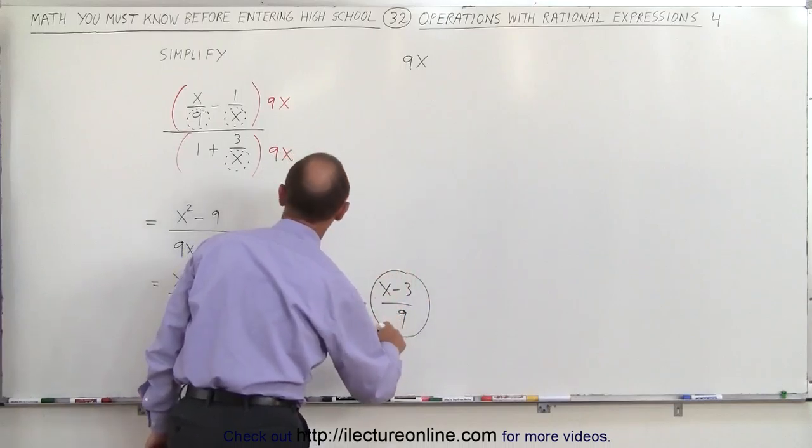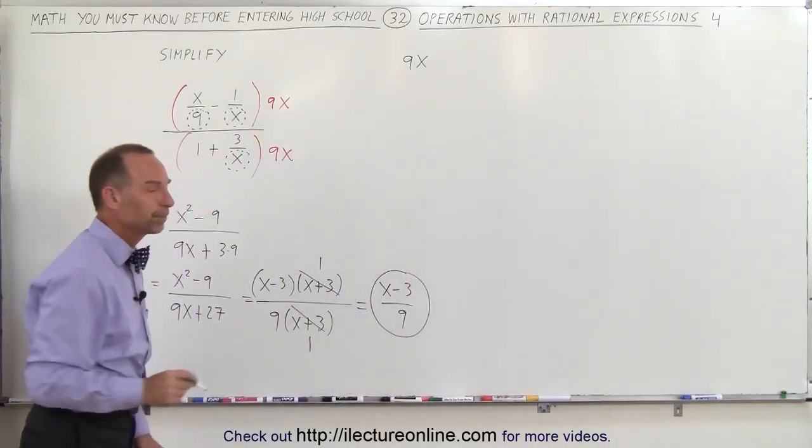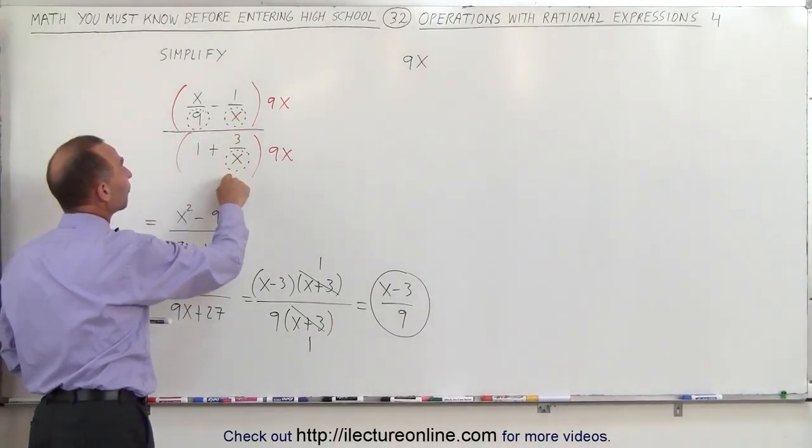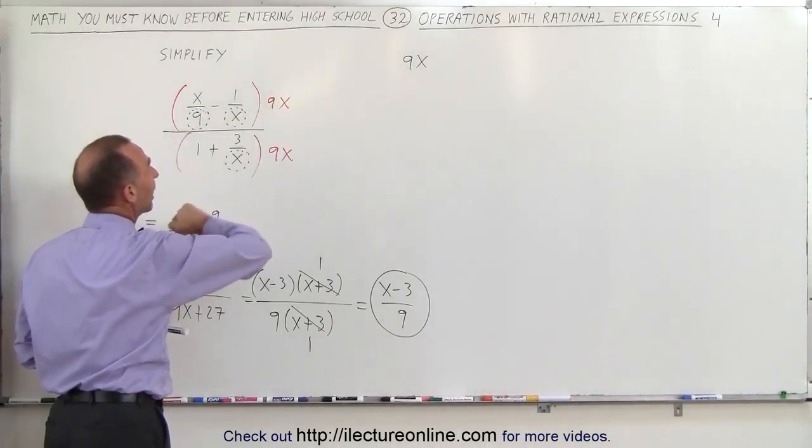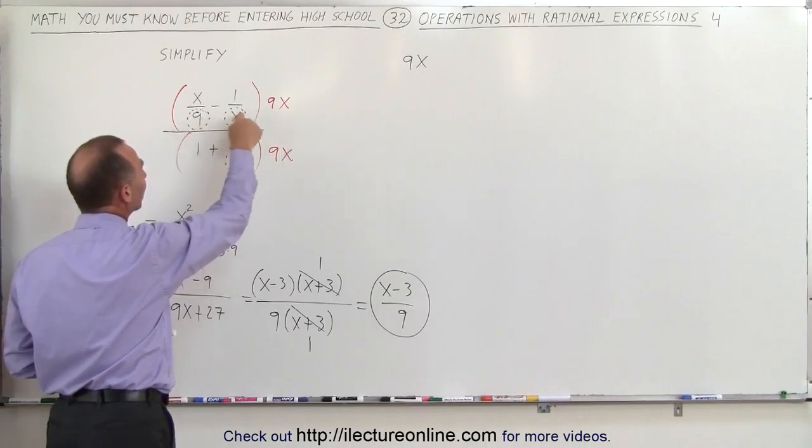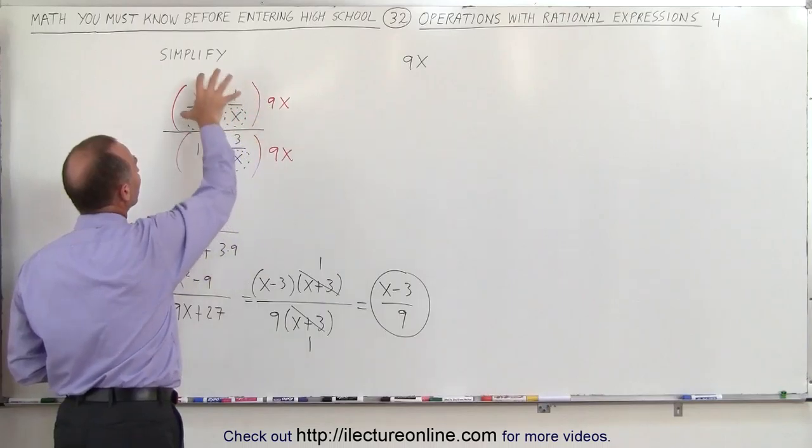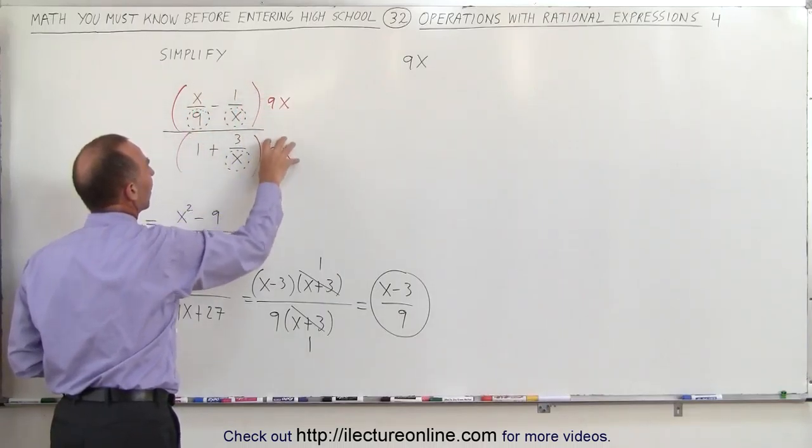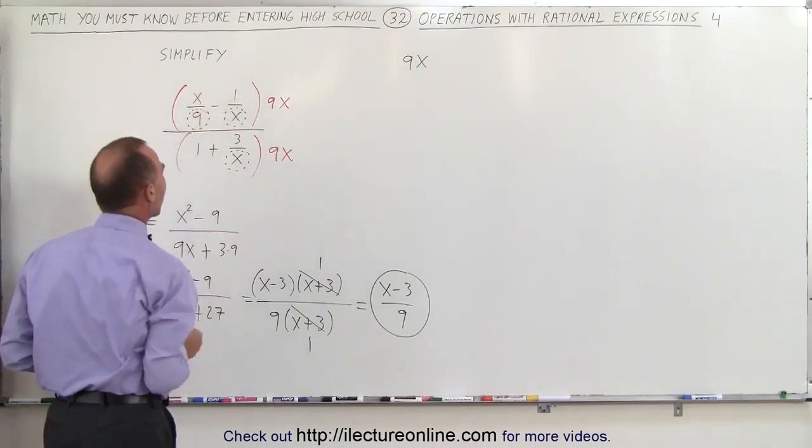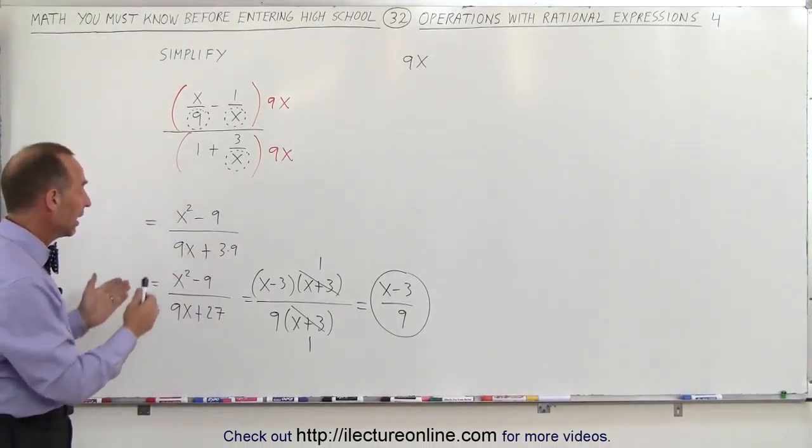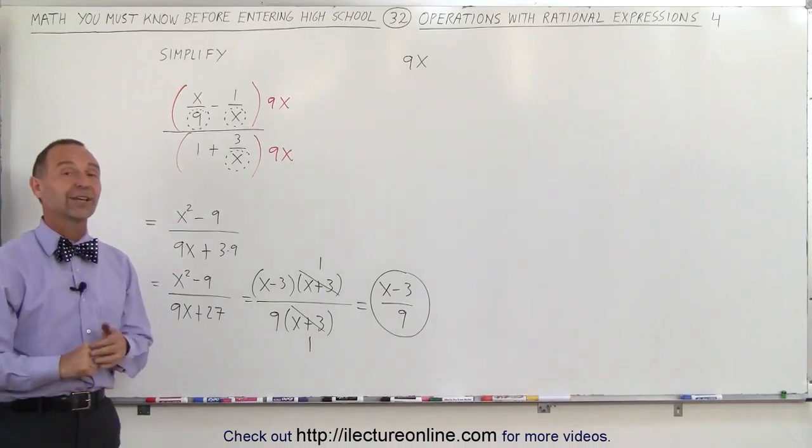And this is the simplified form of this original fraction. Again, the trick is, look at all your denominators, find the smallest common factor, which in this case is 9x because every denominator fits into 9x. If you can now multiply the numerator and the denominator by that smallest common factor to get rid of all the denominators, and then you simply reduce by factoring and cancelling out. And that's how that's done.